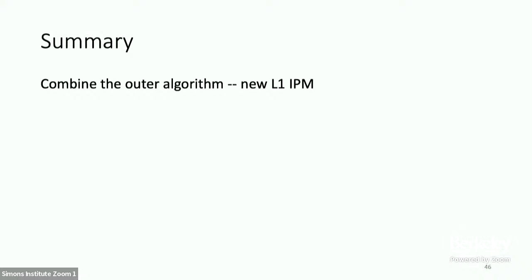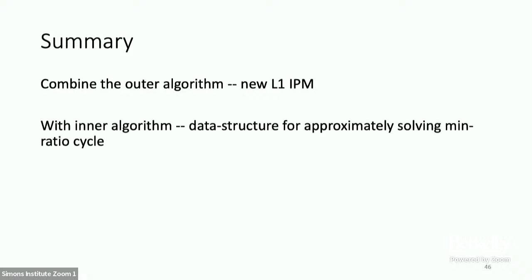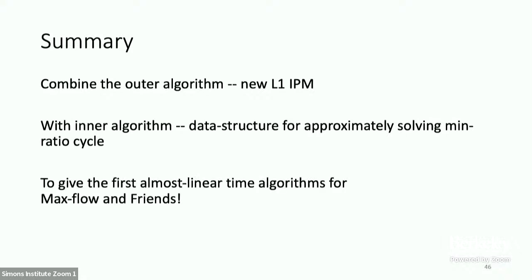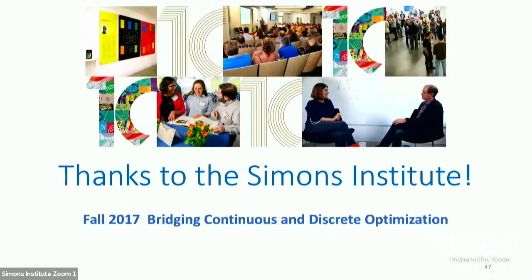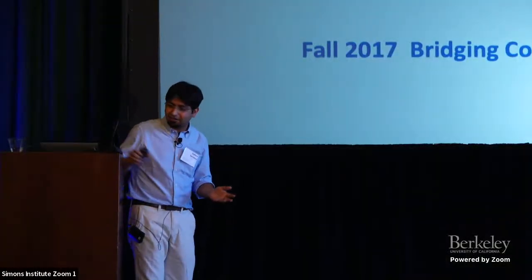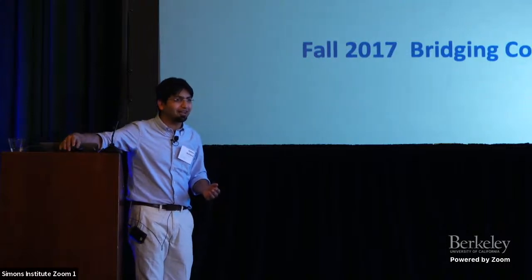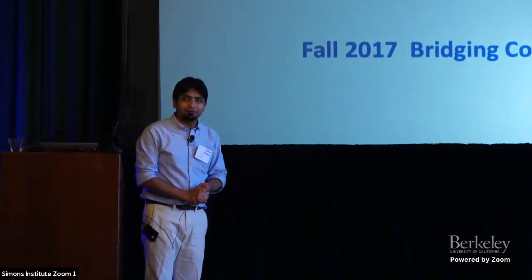We show that we can maintain a data structure keeping a small collection of trees, supporting: updating gradients or lengths in almost constant time per change, returning an approximate solution to the min ratio cycle, and routing flow along the found cycle. This, combined with the L1 IPM outer algorithm, gives our overall almost linear time result for max flow and very many convex flow problems.